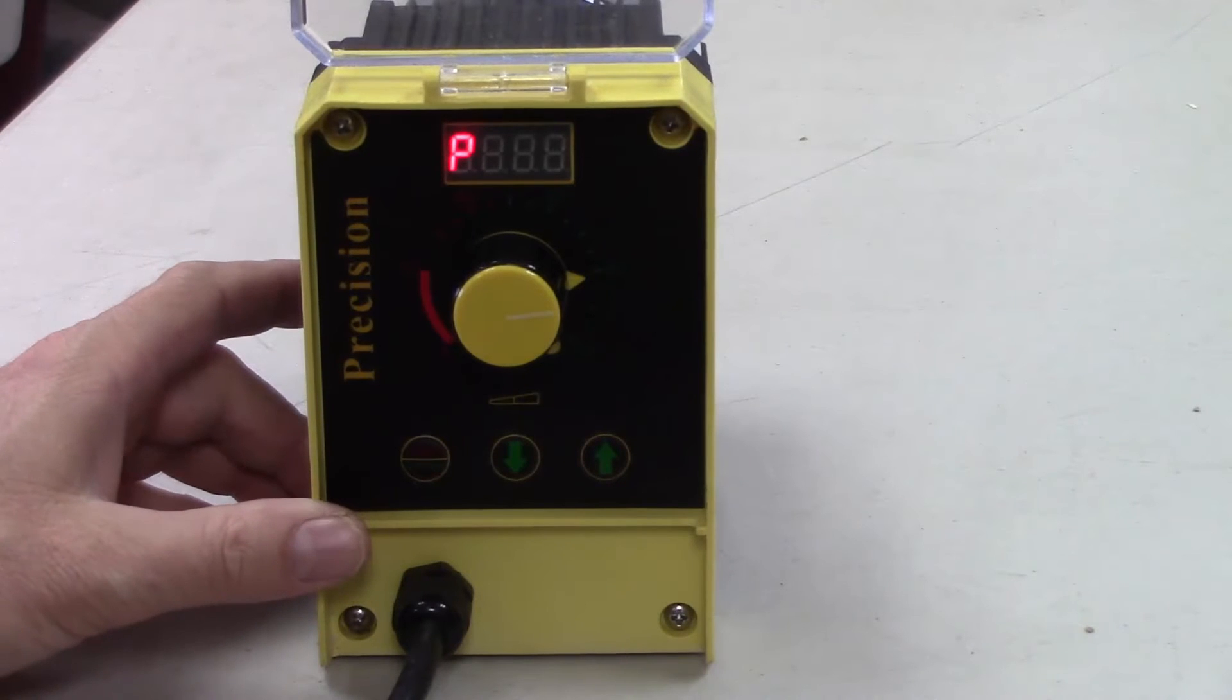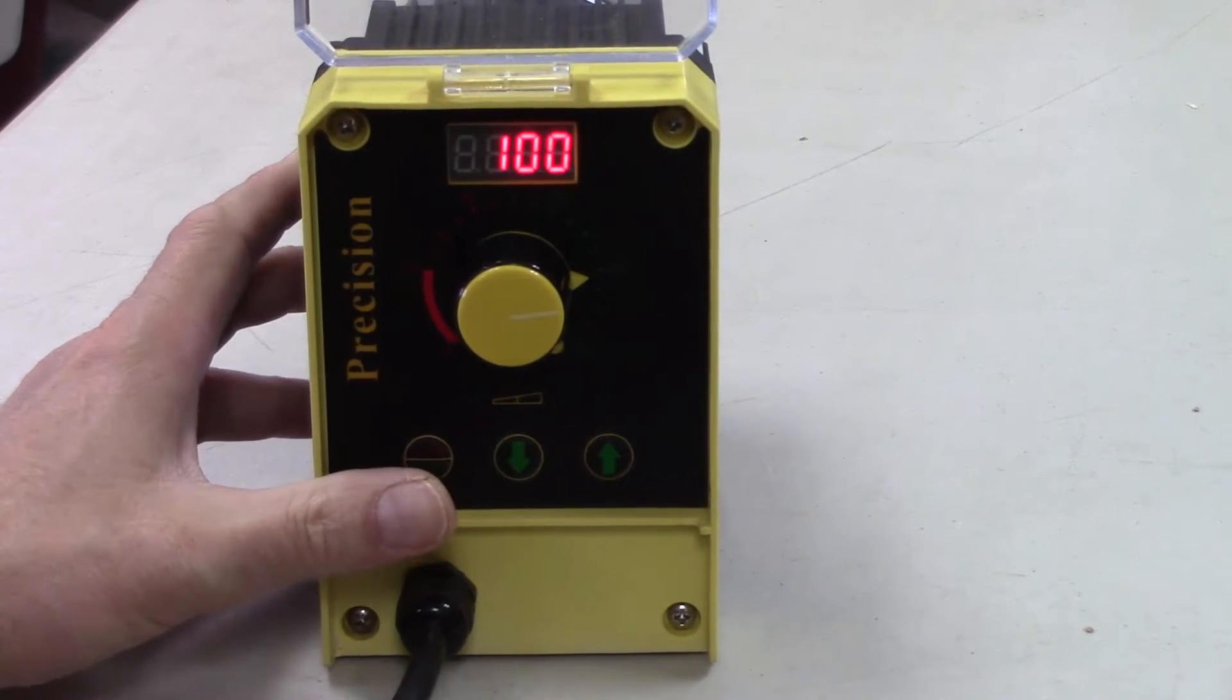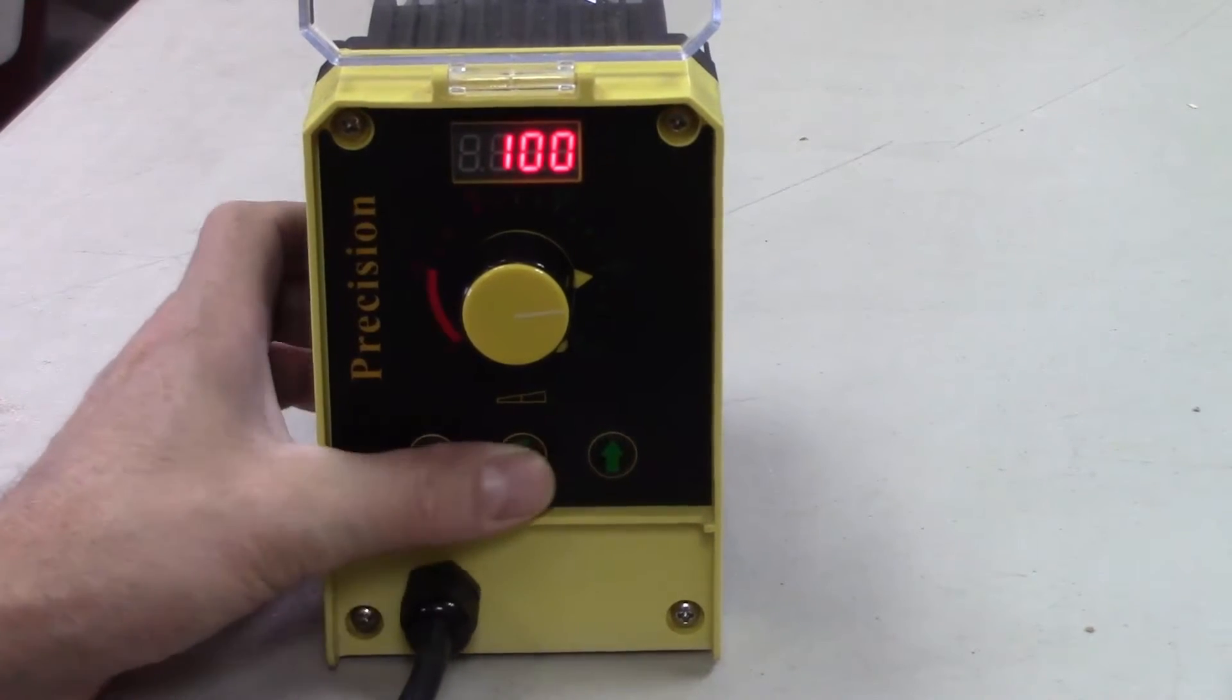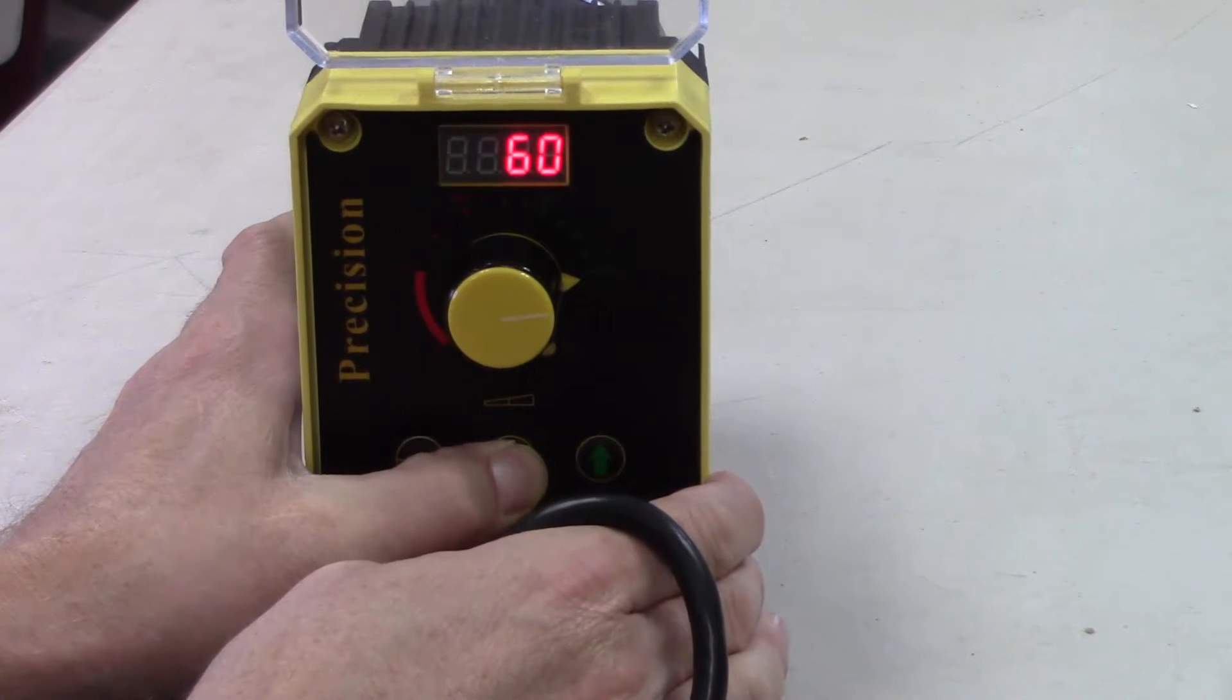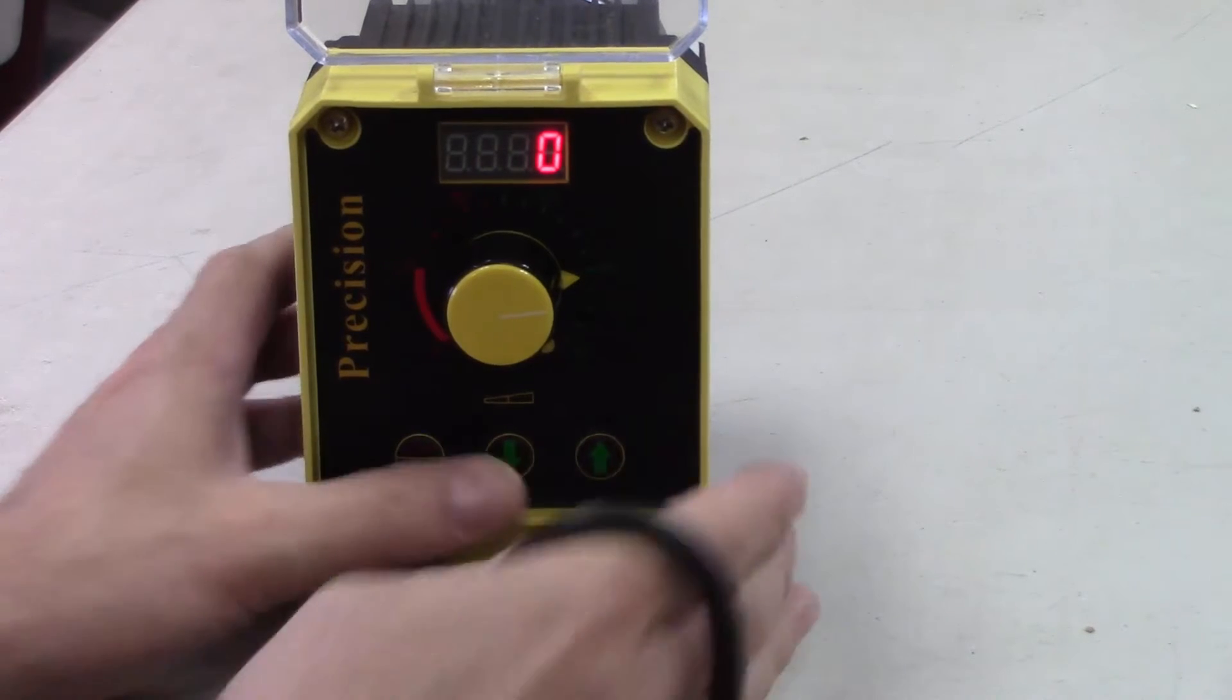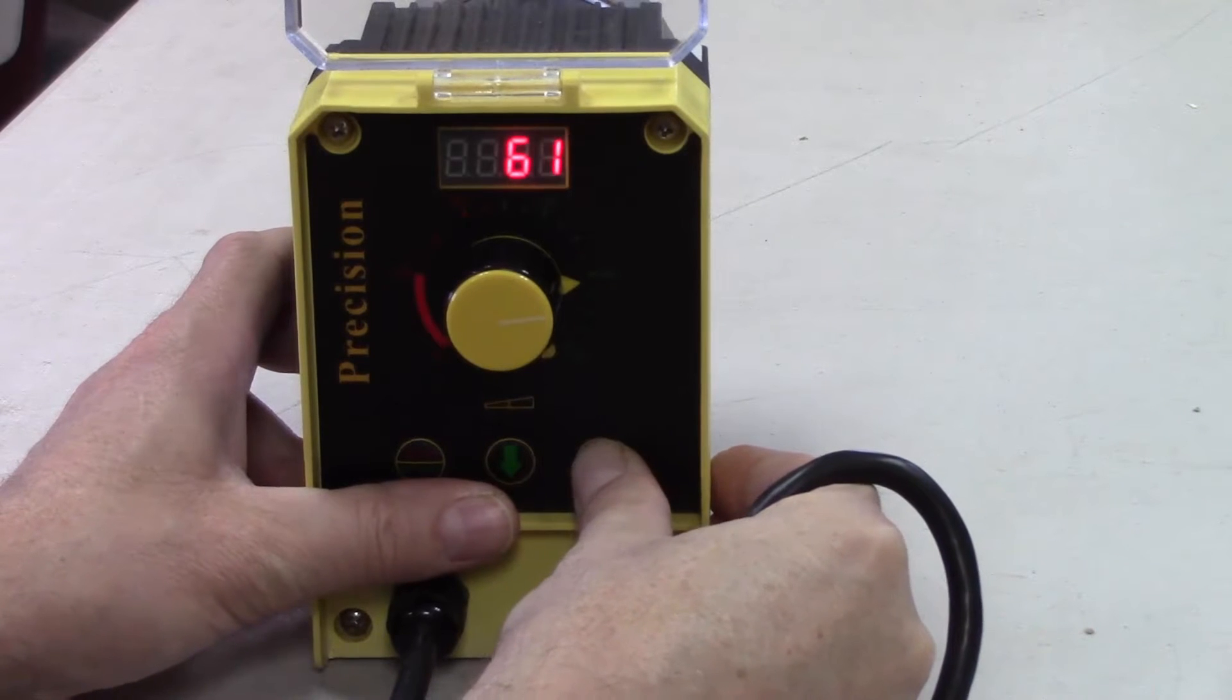When you press the start/stop button, it's going to start pumping and it's going to display a number between zero and a hundred. I'm slowing it down, slowing it down, slowing it down. If you see zero, it's not going to pump. You start going up. Generally you're going to keep the pump probably around 90 to 100, maybe a little bit lower when you fine-tune it.